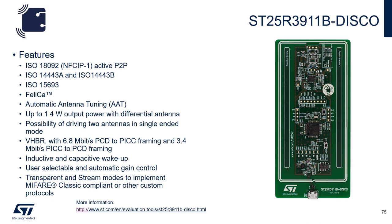The 3911B Discovery Board supports active peer-to-peer, 14443A and B, 15693, and Felica. It also has automatic antenna tuning and up to 1.4 watts of output power using the differential antenna, and the possibility of driving two single-ended antennas. It supports VHBR of 6.8 megabits PCD to PICC and 3.4 megabits from PICC to PCD. It has both inductive and capacitive wake-up, and virtually everything is selectable via the register map.